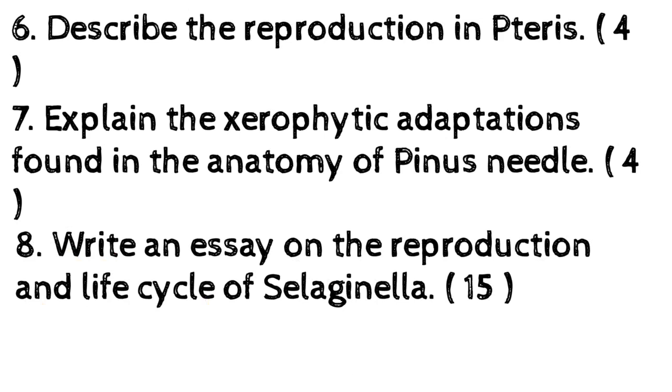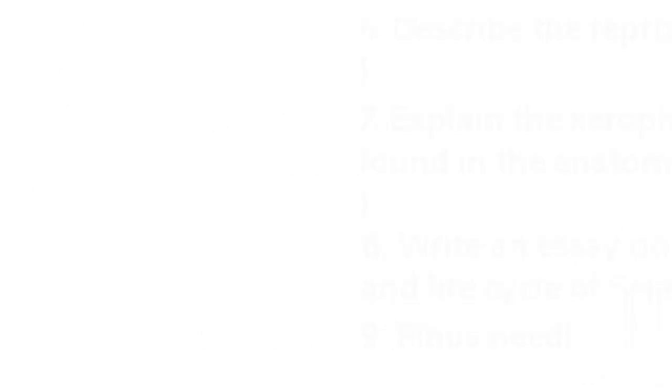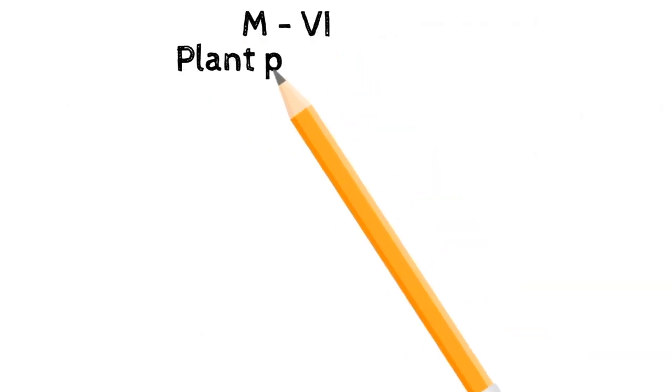9. Pinus needle (1 mark). MB Plant Pathology: 1. Name the causative organism of quick wilt of rubber (1 mark).